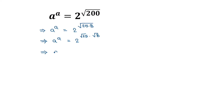So a to the power a is equal to 2 to the power of square root of 25, which is 5, times square root of 8. We can write 2 to the power of 5 times square root of 8 as 2 to the power 5, all to the power of square root of 8.